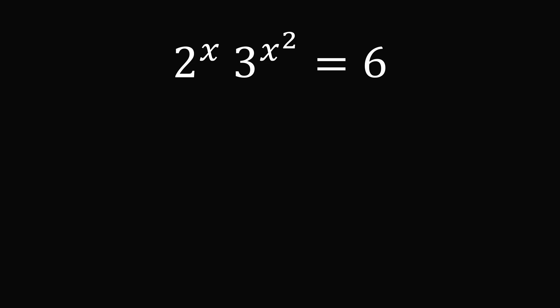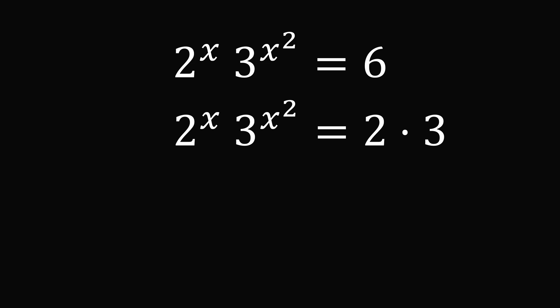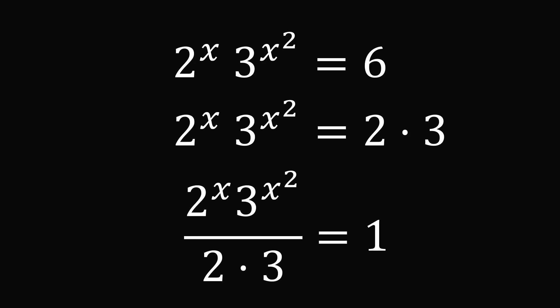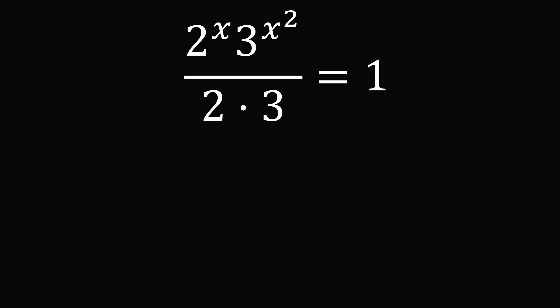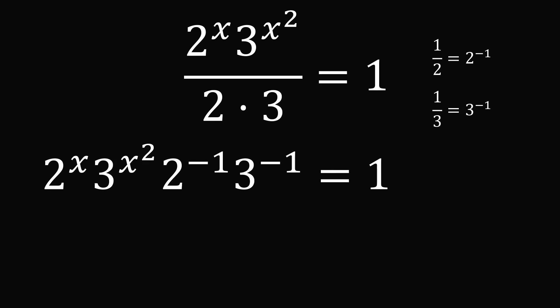We start as before with 6 equal to 2 times 3. Let's divide both sides of the equation by 2 times 3, so the right-hand side becomes 1 and the left-hand side has a denominator of 2 times 3. Recall that one-half is 2 to the power of negative 1, and one-third is 3 to the power of negative 1. So we rewrite the denominator using negative exponents: 2 to the power of negative 1 multiplied by 3 to the power of negative 1.